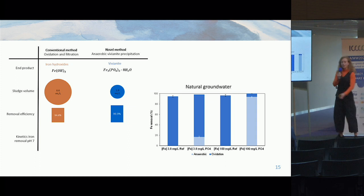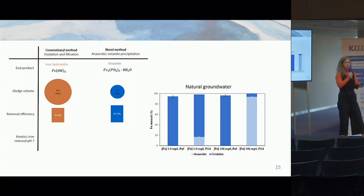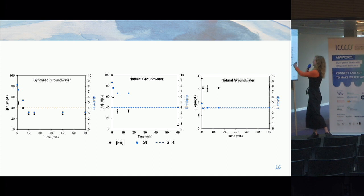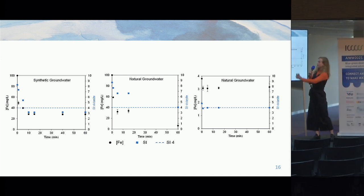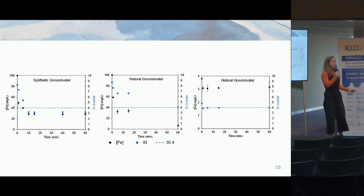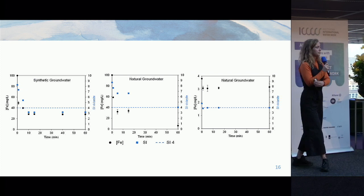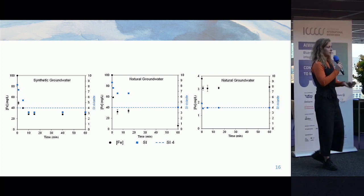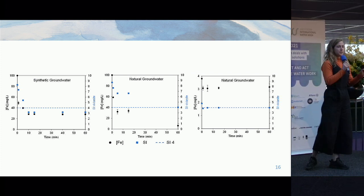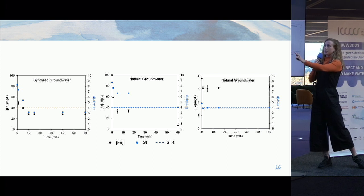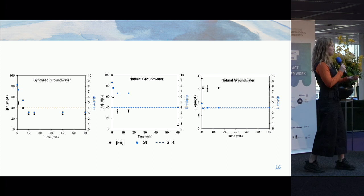What I do not know yet is why there is such poor removal at the low iron concentration. To investigate this, I simulated my experiments with a geochemical model. I calculated the saturation index of vivianite formation, depicted on the right y-axis of these graphs. The first two graphs use the elevated iron concentration of 100 mg per litre, and the right one uses the natural iron concentration. In each graph, the iron concentration — depicted with black dots — stops decreasing when the saturation index drops below a value of 4, shown by the dotted blue line. With the natural iron concentration, this occurred already after one minute, which explains the poor removal.